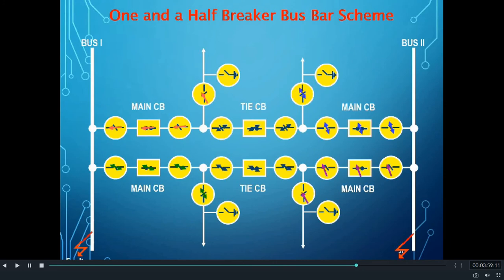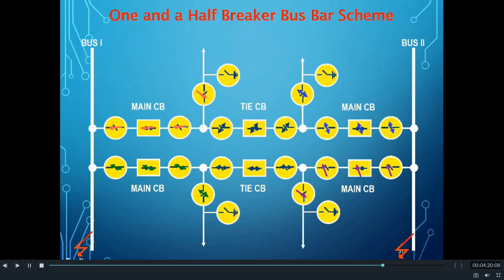With faults on both bus one and bus two simultaneously, the feeders are still working normally as they are interconnected to each other — operating without any bus. The only limitation is that the feeders get interconnected and act as a separate network. In such busbar schemes, faults in any circuit breaker or both buses together will not create any interruption in the system.